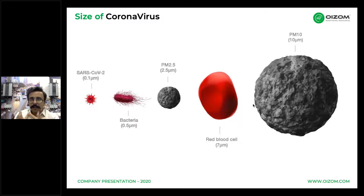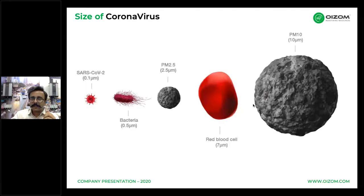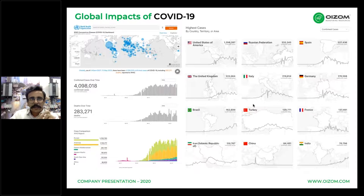This indicates that the virus can easily penetrate through masks used to contain PM2.5. Imagine if the coronavirus were airborne — what kind of catastrophic damage it could create. Before coming to any judgment, let us discuss certain findings about this virus.